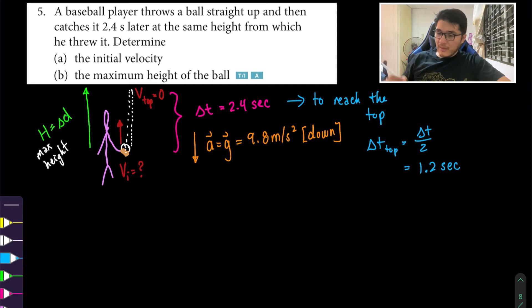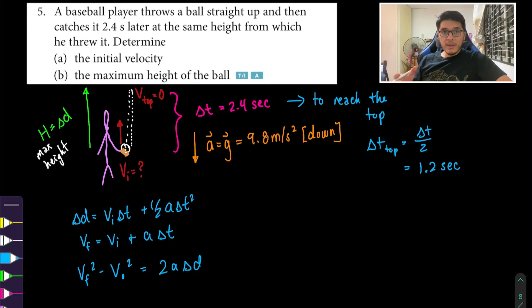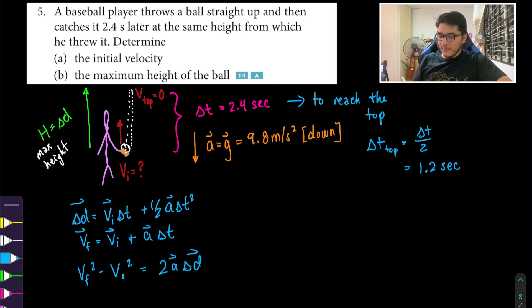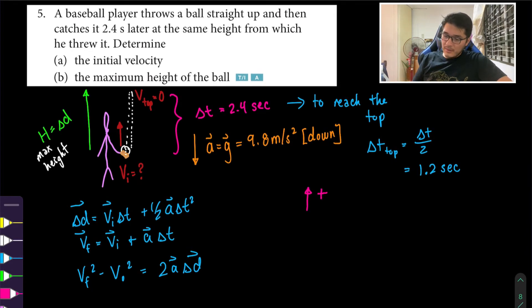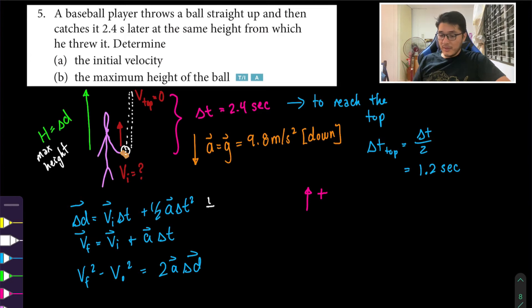Now we use the kinematic equations of motion. I work with the main three — let me write them down and then choose which one to use. Although these are in scalar form, we're dealing with vector quantities so we need arrowheads and signs. Our convention: vectors pointing up are positive. Label the equations one, two, three, then solve part a.